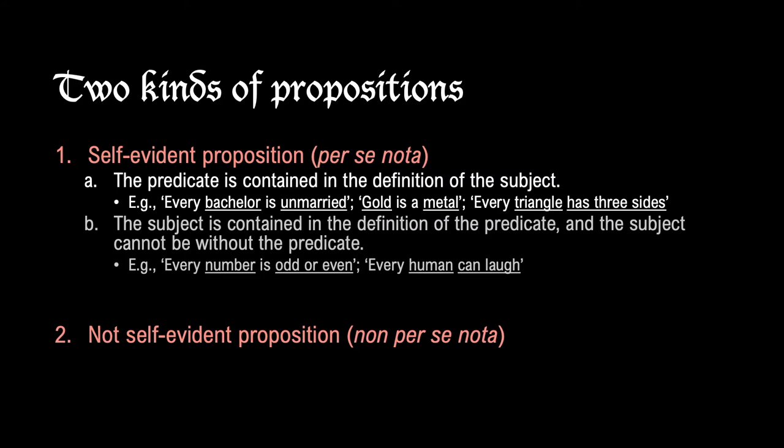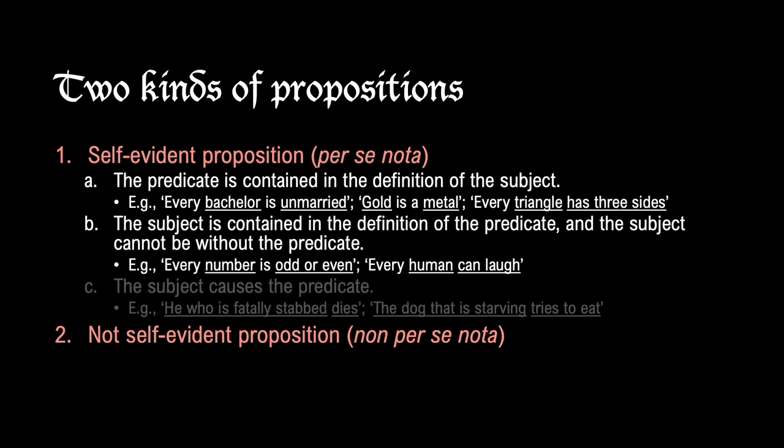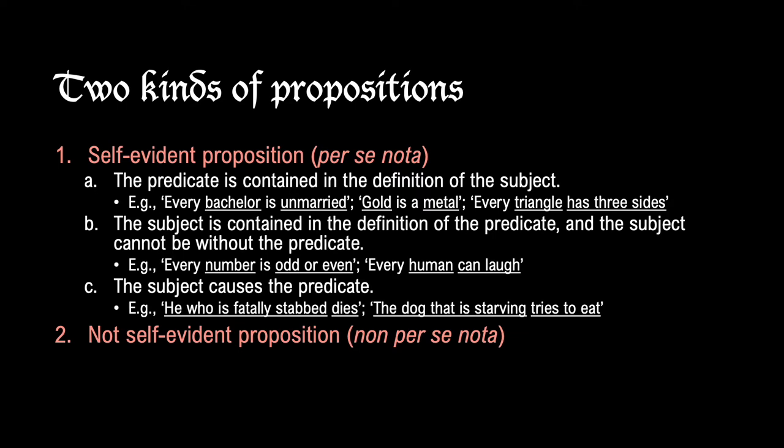A second kind of self-evident proposition is one in which the subject is contained in the definition of the predicate, and the subject cannot be without the predicate — for instance, 'every number is odd or even,' or 'every human can laugh.' The third kind of self-evident proposition is one in which the subject causes the predicate — for instance, 'he who is fatally stabbed dies,' because being fatally stabbed causes death. Another example: 'the dog that is starving tries to eat,' because starving causes the trying to eat.